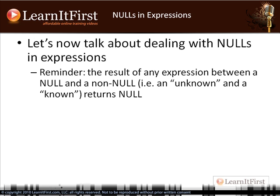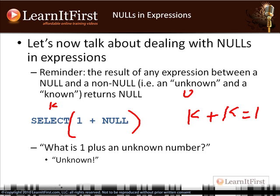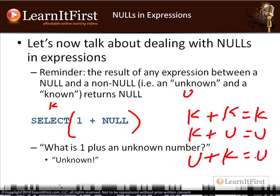Now let's shift and talk about dealing with nulls in an expression. The result of any expression between a null and a non-null returns null. What is one plus an unknown number? Think of it this way: an unknown is U and a known is K. K plus K equals K. K plus U equals U. What's one plus an unknown number? U plus K equals U. What's an unknown number plus one? And unknown plus unknown also equals unknown. Nulls are tricky.